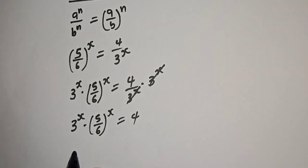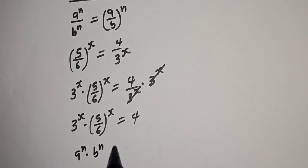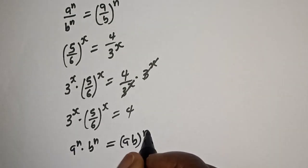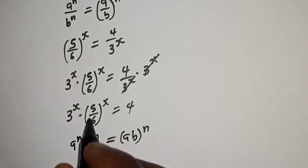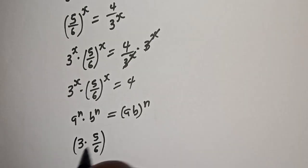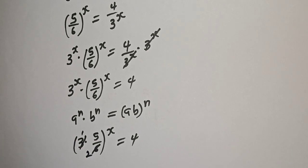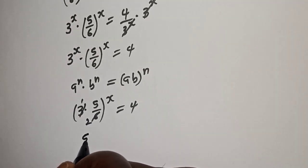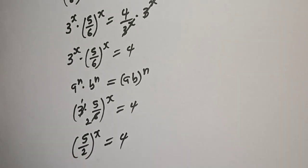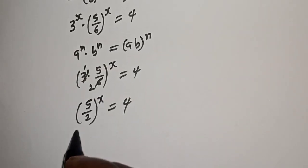Also take note that if you have a raised to power n multiplied by b raised to power n, this is equal to ab raised to power n. Applying this to the left hand side, 3 multiplied by 5 over 6 raised to power s simplifies to 5 over 2 raised to power s is equal to 4.